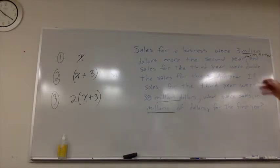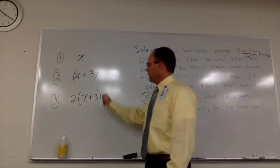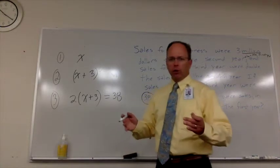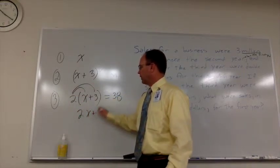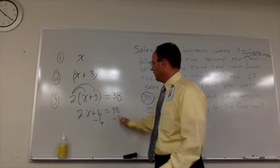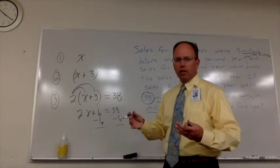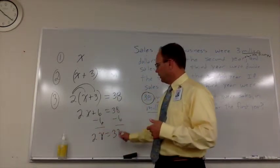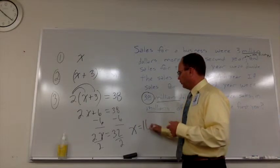We know that sales for the third year were $38 million. So I take the third-year equation and set it equal to 38: 2(X + 3) = 38. Distributing, that gives two times X and two times three, so 2X + 6 = 38. Subtract 6 from both sides to isolate X, and we get 2X = 32. Divide each side by 2, and we find X = 16.